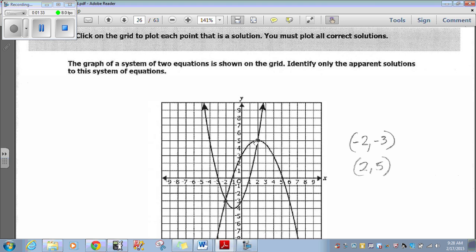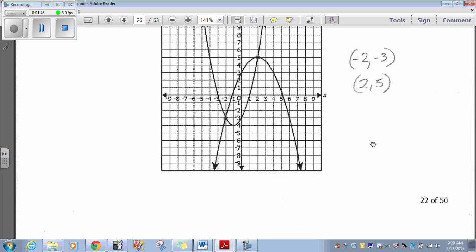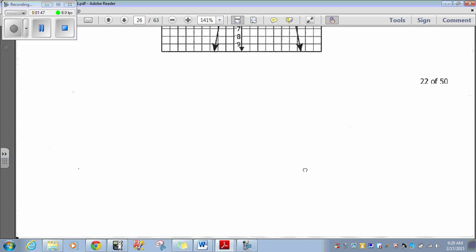Right? X is 2. Y is 5. And they intersect here. X is negative 2. Y is negative 3. And those are the only places that they intersect. So those are the correct answers. All right. Oh, these are easy. Let's go into 23.